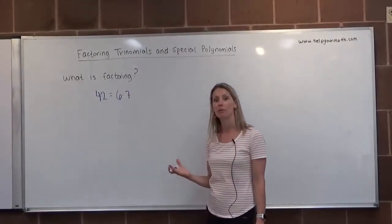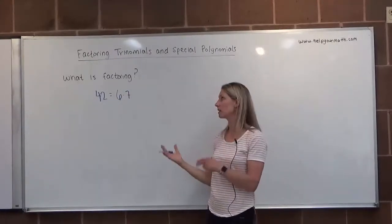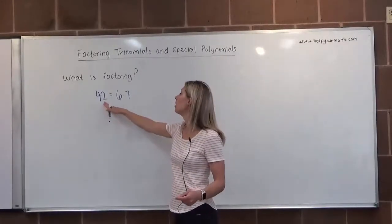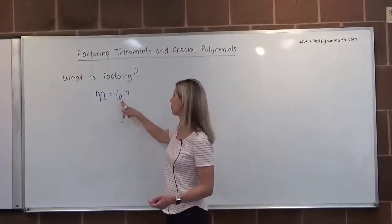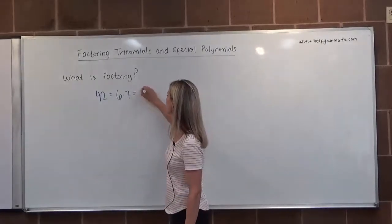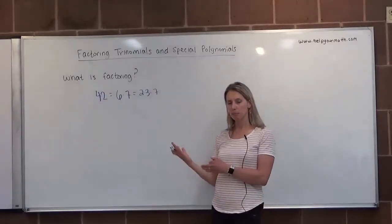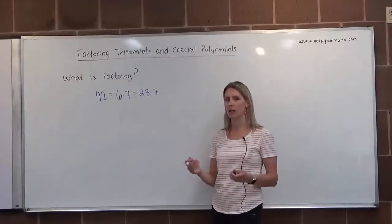In arithmetic, you might remember doing prime factorization. It's basically the same idea as factoring. Prime factorization just means writing a number as a product of its primes. We're almost there, but 6 would be 2 times 3 and then times 7. So this would be the prime factorization.